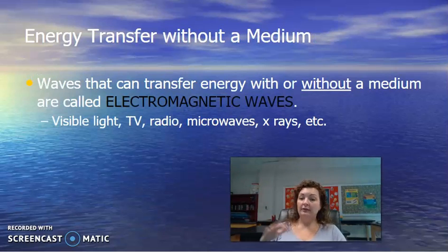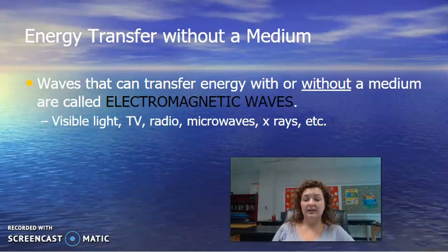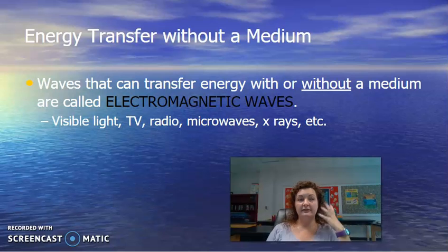Waves that can travel with or without a medium are called electromagnetic waves. These are going to be the ones like visible light, TV, radio, microwaves, x-rays, gamma rays, etc. Those are good examples that you do not necessarily have to have a medium, but it can go through a medium as well.